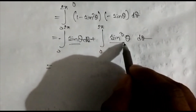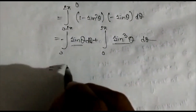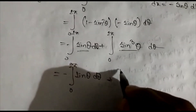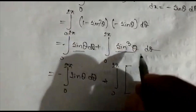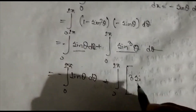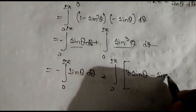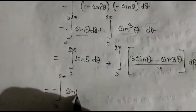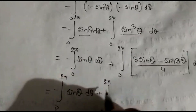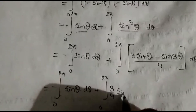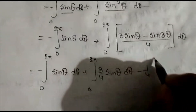We transform sin³θ using the identity: sin³θ = (3sinθ − sin3θ) / 4. So the integral from 0 to 2π of sin³θ dθ becomes the integral from 0 to 2π of (3/4)sinθ dθ minus the integral from 0 to 2π of (1/4)sin3θ dθ.